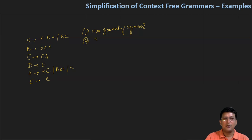Second, hum kya karenge ki non-reachable symbol ko remove karenge. Humara grammar ka koi bhi production start state ke through hi pahunchta hai. Derivation ke dauran hum apna start symbol se start karte hain, then us symbol se kisi production pe pahunchte hain. Isliye aisa symbol jahaan pe hum kabhi bhi nahi pahunch paayenge, aisa symbol ko hum remove karenge.